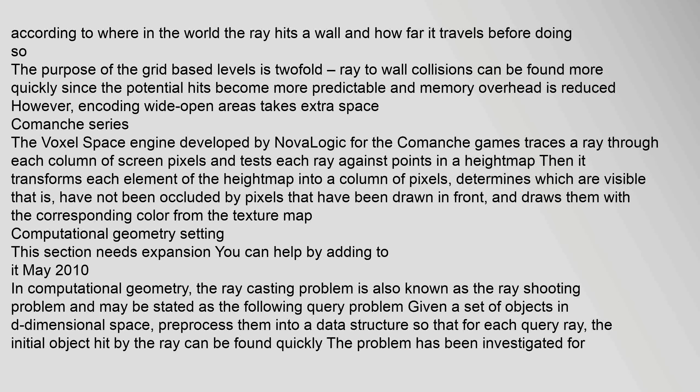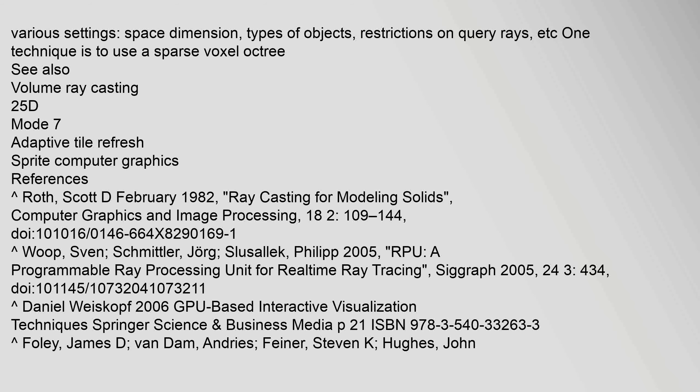In computational geometry, the ray casting problem is also known as the ray shooting problem and may be stated as the following query problem: Given a set of objects in d-dimensional space, preprocess them into a data structure so that for each query ray, the initial object hit by the ray can be found quickly. The problem has been investigated for various settings: space dimension, types of objects, restrictions on query rays, etc. One technique is to use a sparse voxel octree.